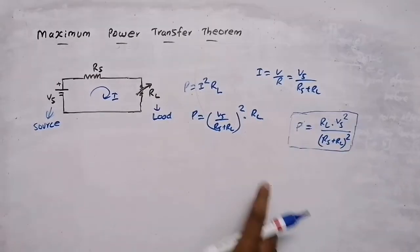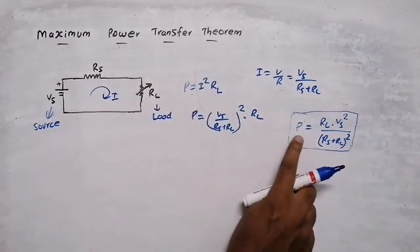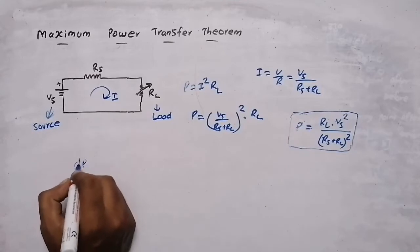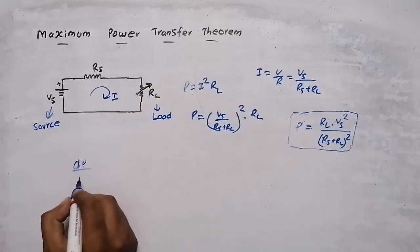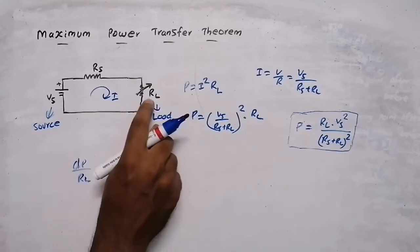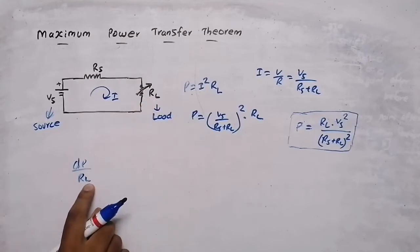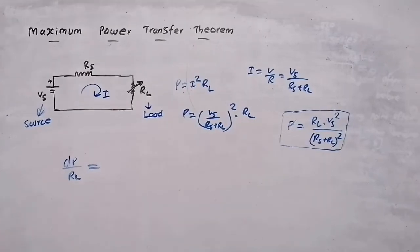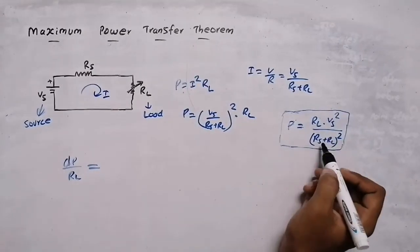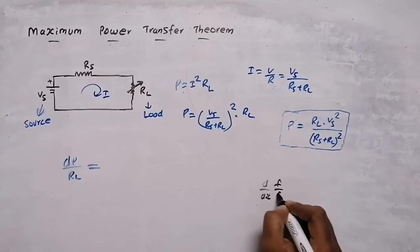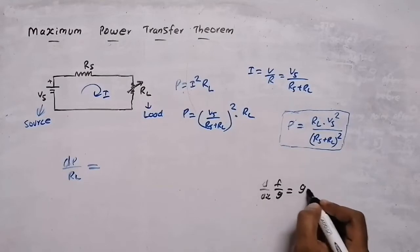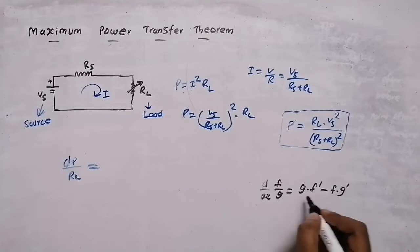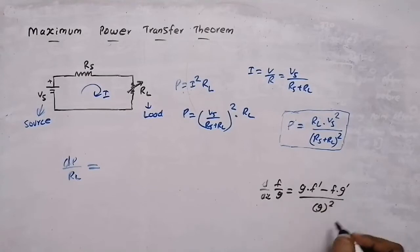Now we need to find the maximum power. For finding maximum power, we will differentiate this power — dP with respect to Rl. For the load resistor, we need to find the maximum power, so we will differentiate with respect to Rl. The function is present in both numerator and denominator, so we use d/dx of F/G, which equals (G·F' minus F·G') divided by G squared — the quotient rule.